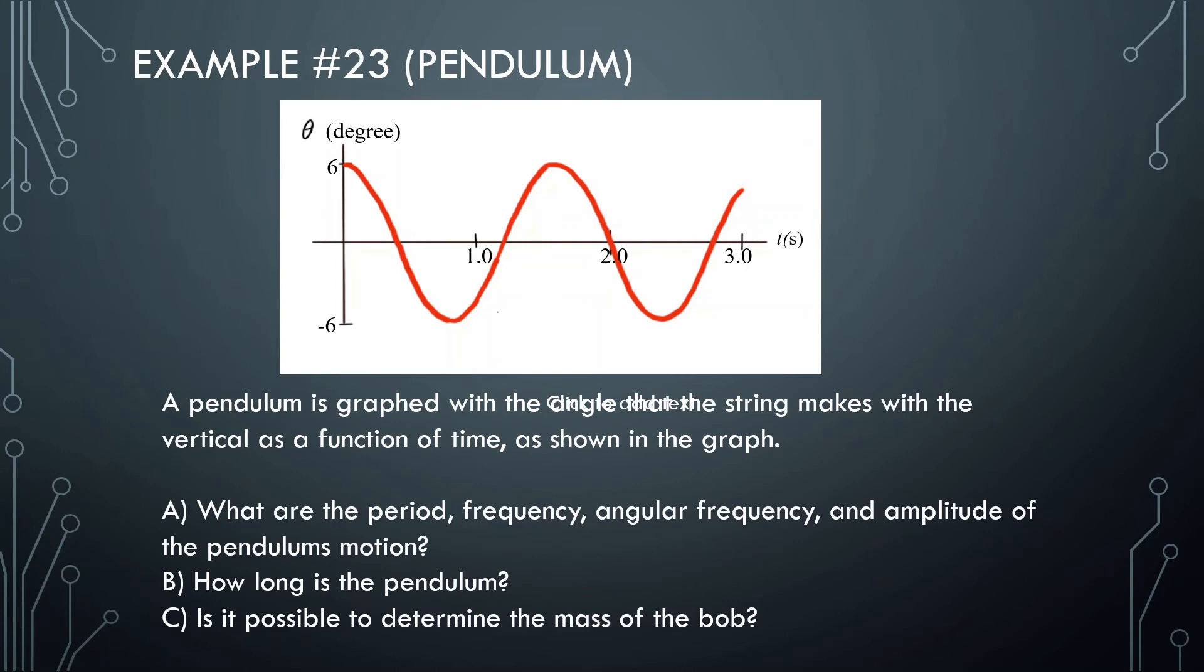Let's look at this problem. A pendulum is graphed with the angle that the string makes with the vertical as a function of time as shown in the graph. What are the period, frequency, angular frequency, and amplitude of the pendulum's motion?